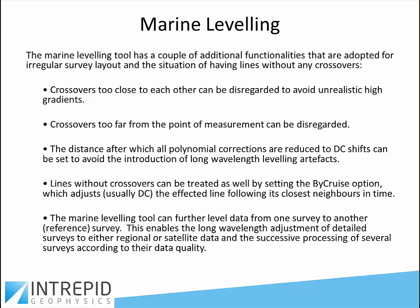Marine levelling involves a relatively chaotic design of surveys, especially when multiple surveys collide with each other. You have to cope with some lines not having crossovers and others having too many, and crossovers that are too close to each other causing unrealistically high gradients — you want to ignore some in that situation. Crossovers that are too far away from the point of measurement have no influence on each other. And if you wish to apply a polynomial correction, you don't want to do that at a distance too far from the original justification — so there's a method for the correction to die out.